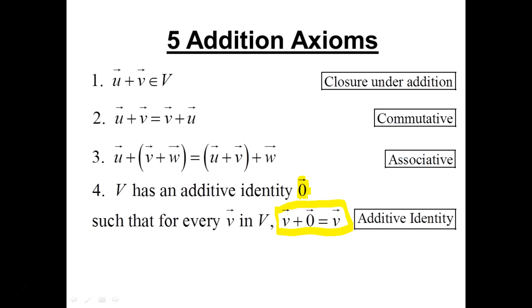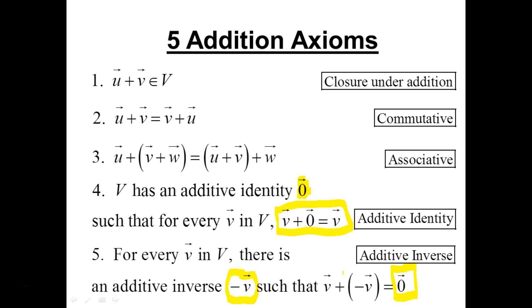And then the fifth addition axiom is the fact that I need to have an additive inverse. So if I take any vector V, there needs to be another vector around. Now we call it minus V, where basically when I add those two together, I get back to the additive identity. I get back to the zero vector. Everyone has to have their opposite also in the set. And so that property is called additive inverse.